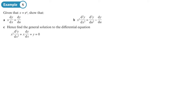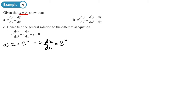The substitution given here is x equals eᵘ. Before solving the second order differential equation, we need to show two expressions are true in parts a and b. For part a, we write down x = eᵘ and differentiate to get dx/du = eᵘ, which also equals x. So x = dx/du.